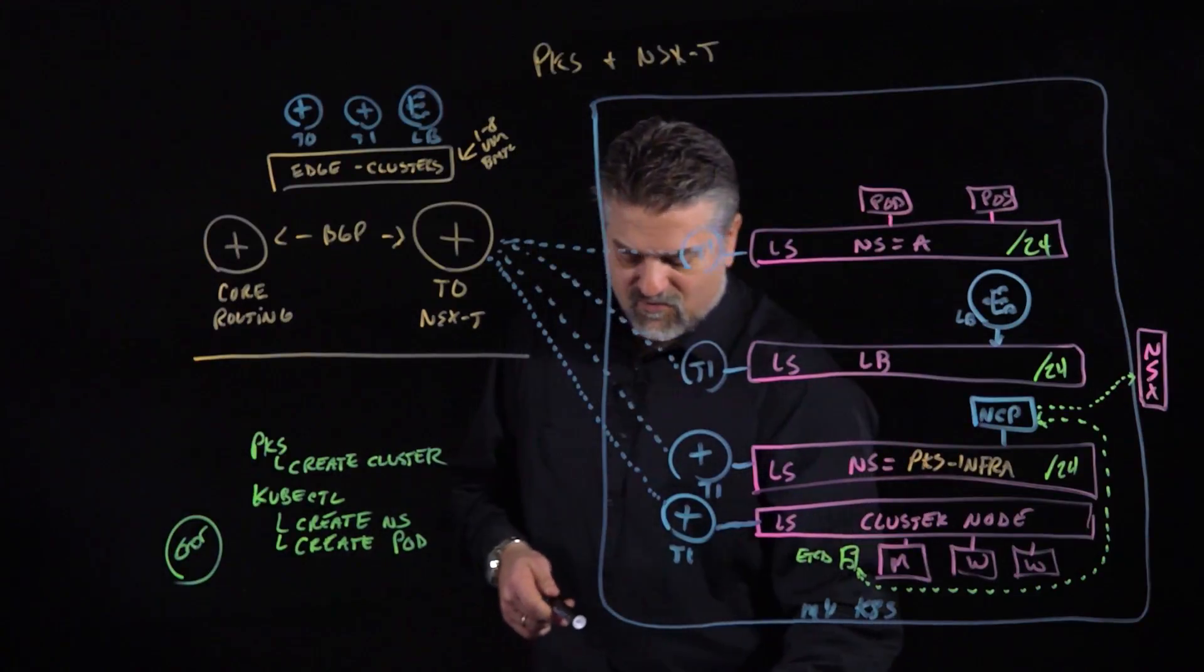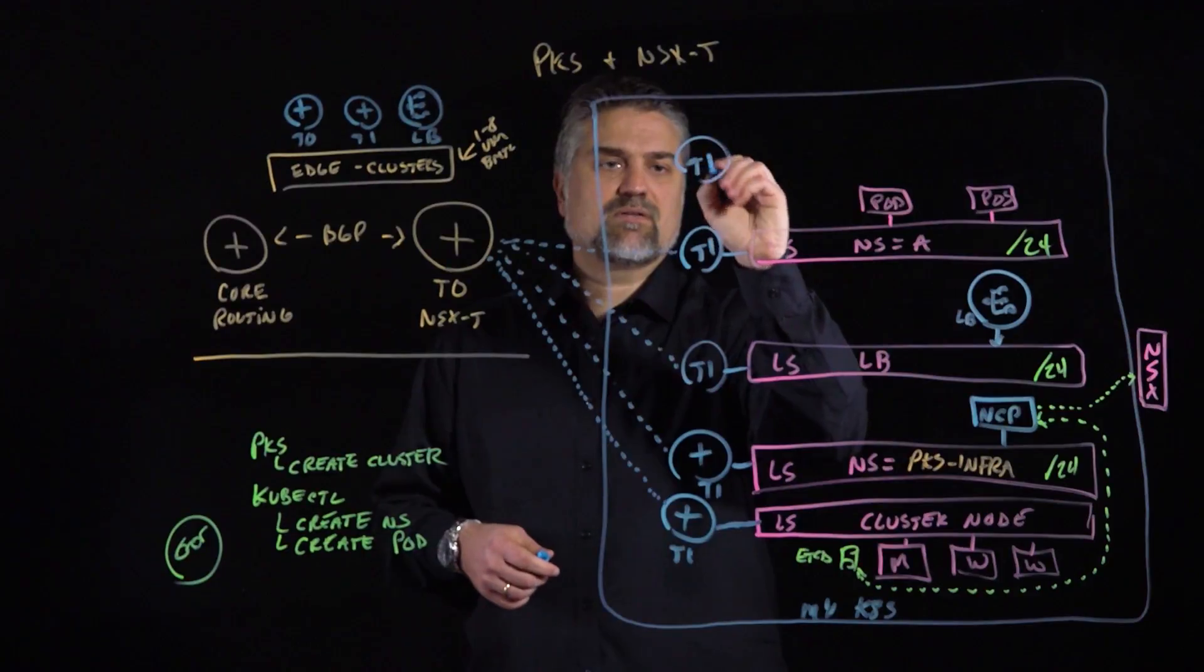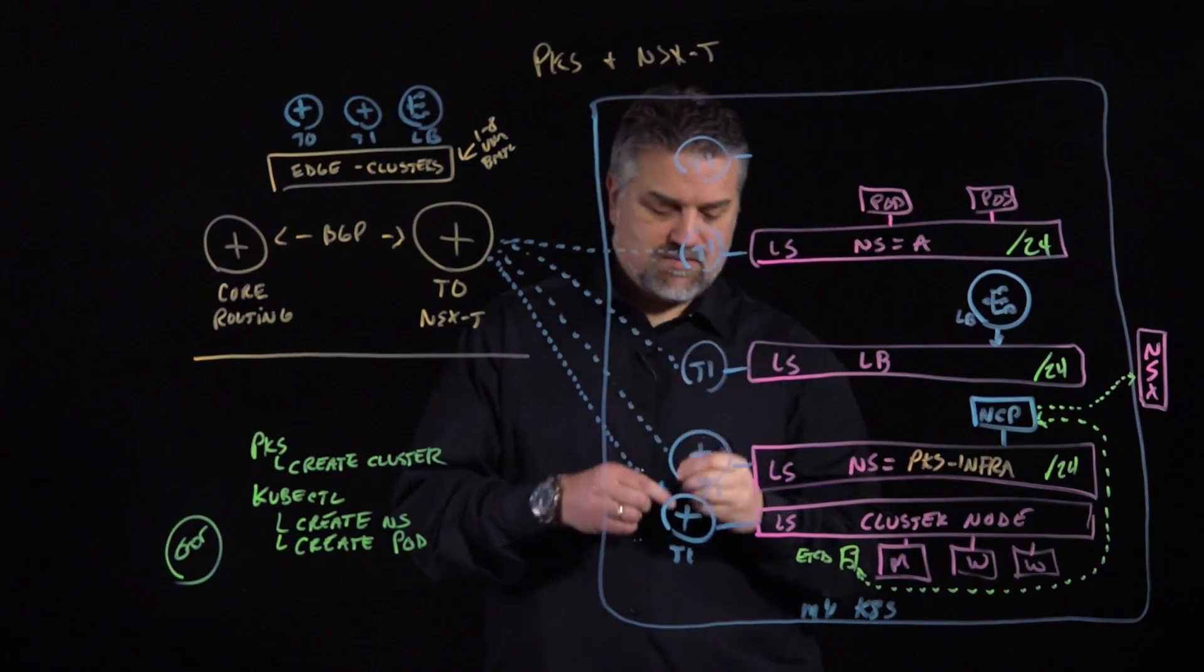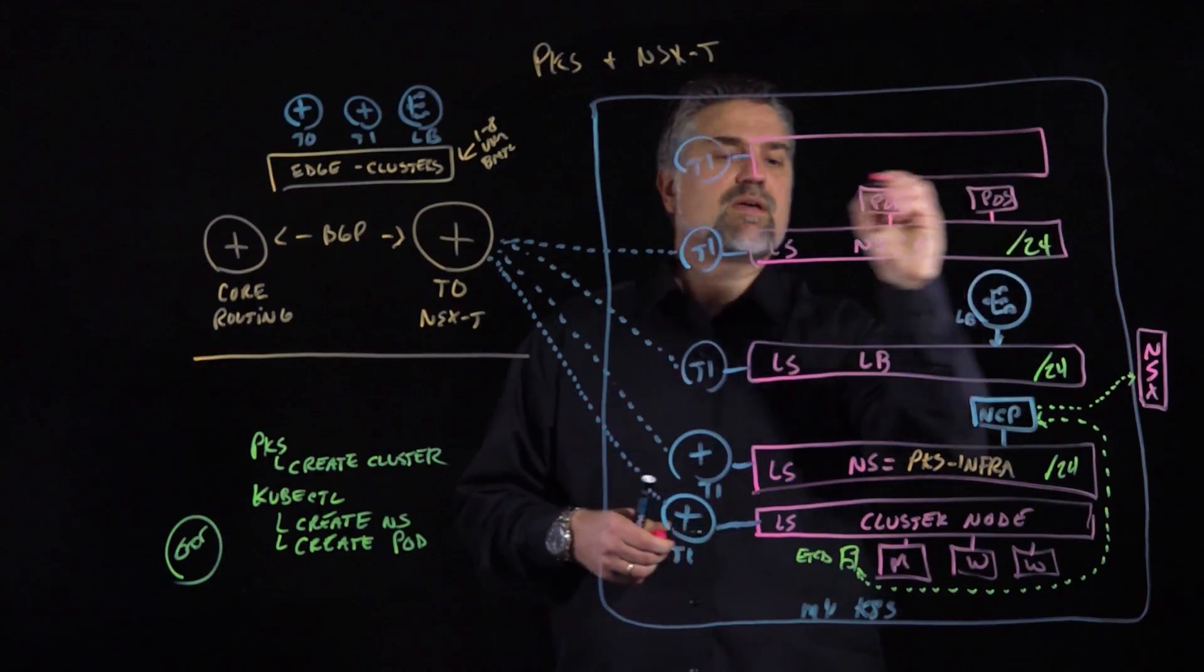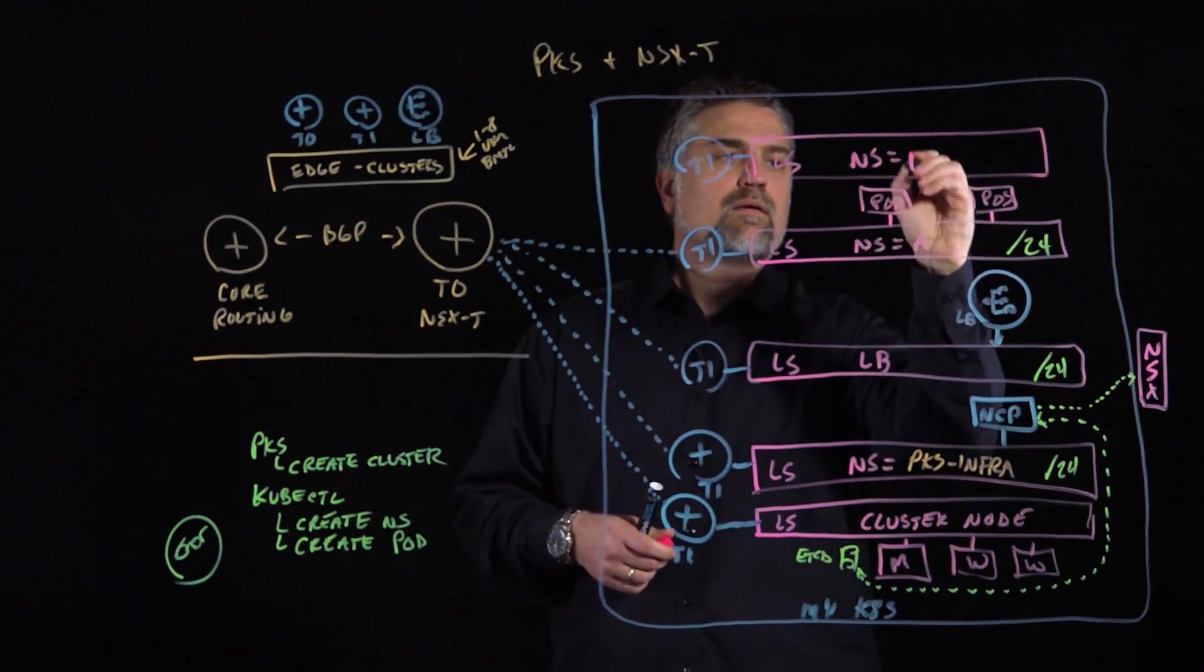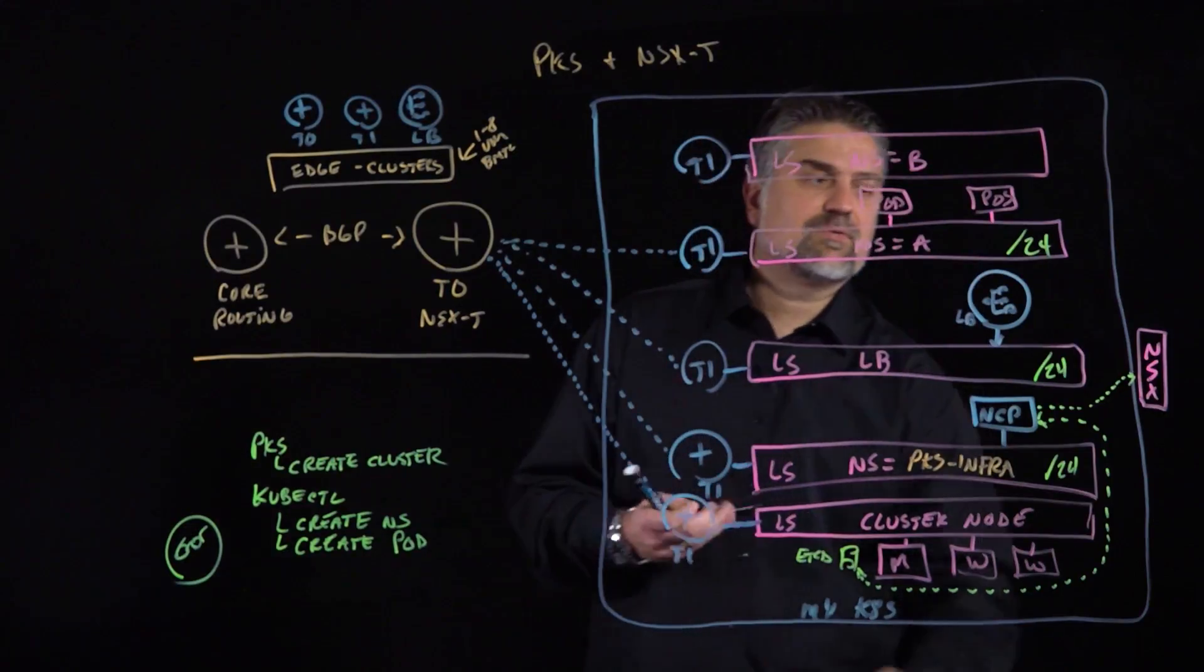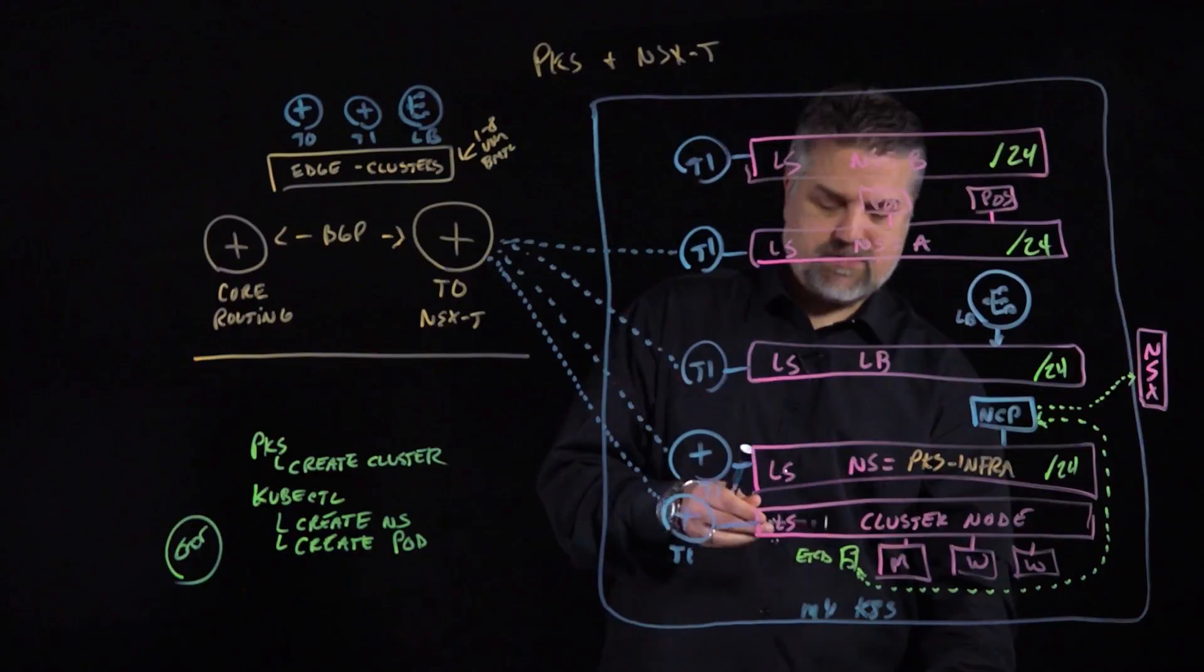So not only do we get these logical switches, but we also get another T1 connected to the logical switch and dynamically routing here. As it lays out, if we decided we were going to create another namespace, this task repeats on and on. So we have another T1 with another logical switch for namespace B and it's running a /24 as well, and we've got some pods on there.